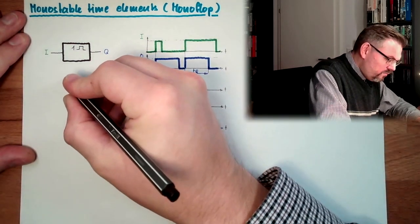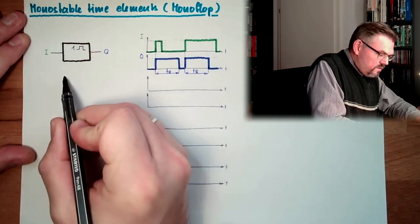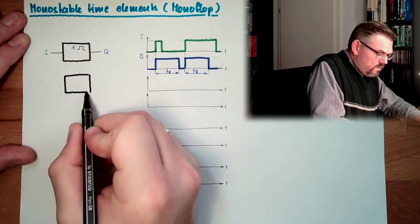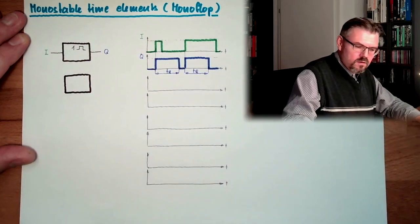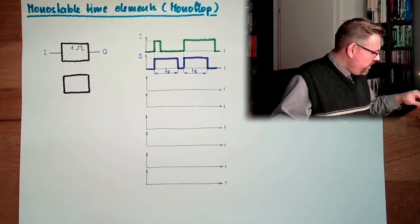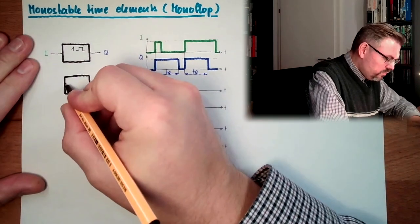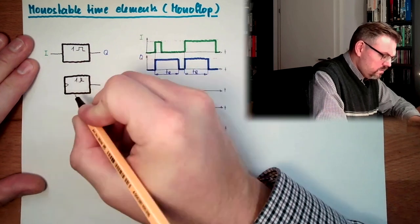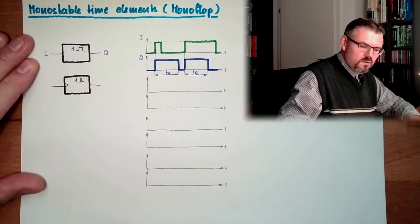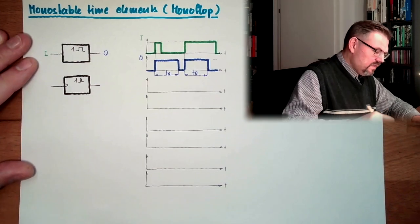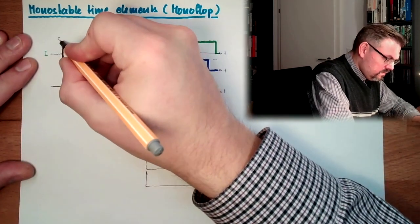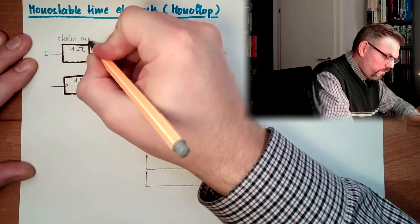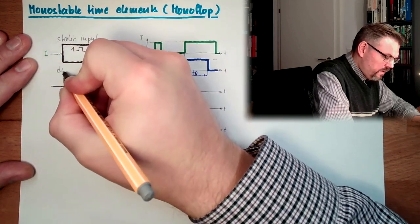So for instance, there would be a monoflop with dynamic input. So this here is static input, and this dynamic input.